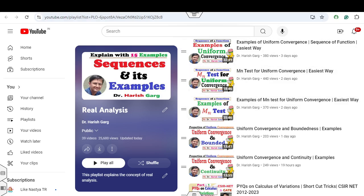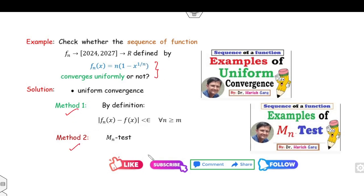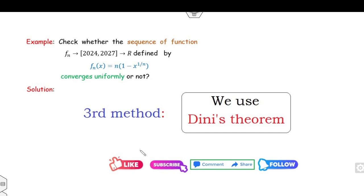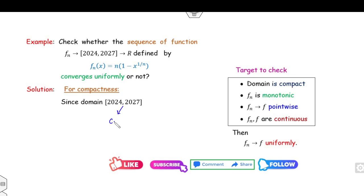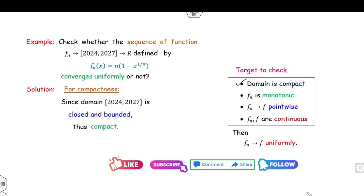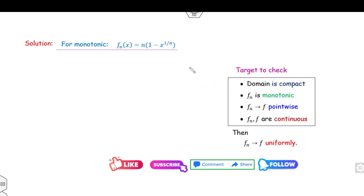The first two methods using the Weierstrass M-test and other criteria have been explained in previous lectures. Now applying Dini's theorem: the four necessary conditions to check are — the domain must be compact, fn must be monotonic, fn must converge pointwise, and fn and f must be continuous. First, the domain [2024, 2027] is closed and bounded, so it is compact.